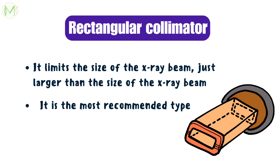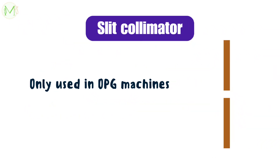The next type of collimator is rectangular. It limits the size of the X-ray beam to just larger than the size of the X-ray film, and it is the most recommended type of collimator. Lastly, we have the slit type of collimator, which is used only in OPG machines.